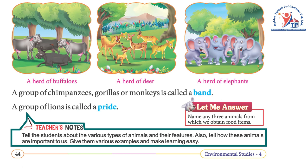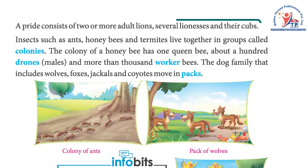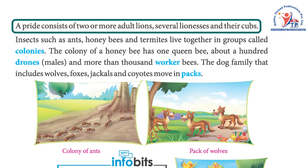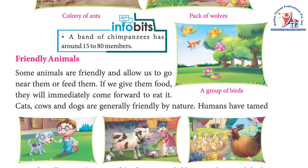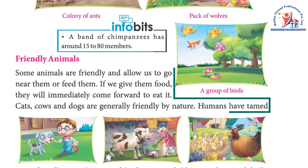A pride consists of two or more adult lions, several lionesses, and their cubs. Insects such as ants, honeybees, and termites live together in groups called colonies. The colony of a honeybee has one queen bee, about a hundred drones (males), and more than a thousand worker bees. The dog family, which includes wolves, foxes, jackals, and coyotes, moves in packs. A band of chimpanzees has around 15 to 80 members.